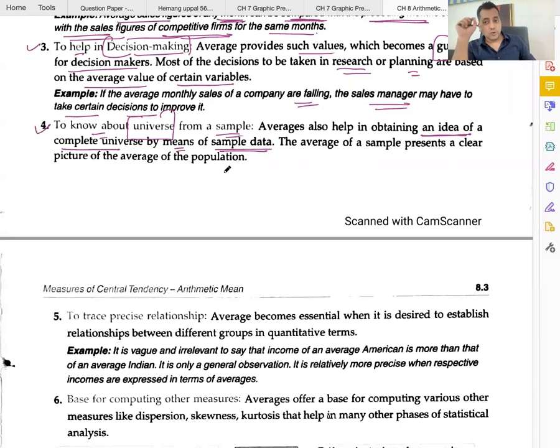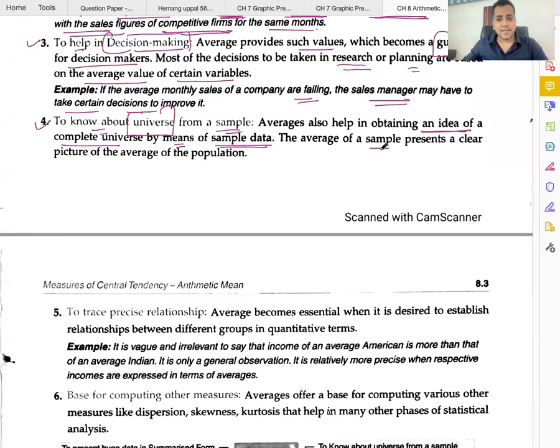To know about the universe from a sample - the average of a sample gives us the average of the population.